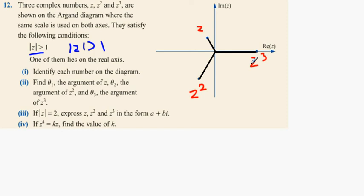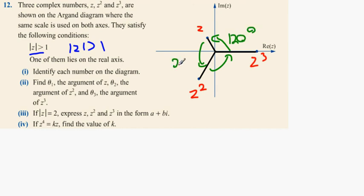We need to find the argument of Z, Z squared, and Z cubed. They're going to be an even displacement from each other — each time it goes around, it makes an even angle. So the argument of Z is going to be 120 degrees, the argument of Z squared is going to be 240 degrees, and the argument of Z cubed is going to be 0 degrees because it's back where it started.